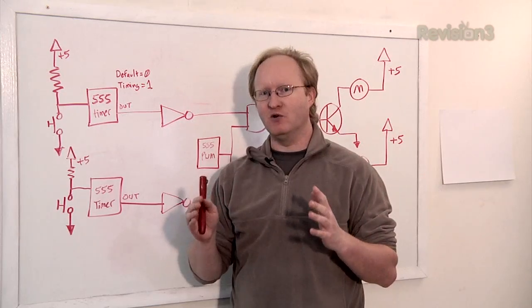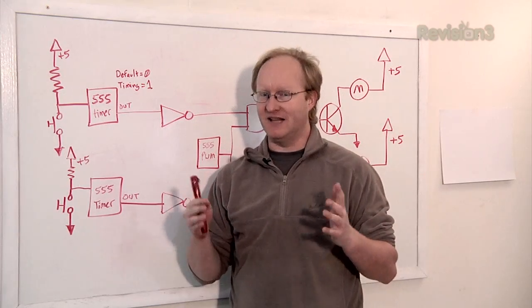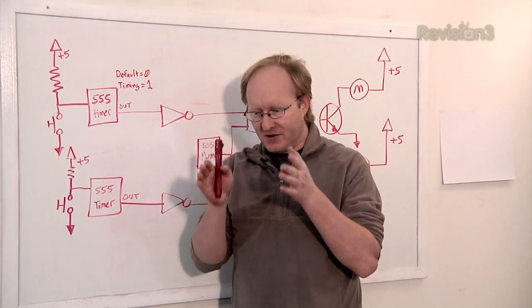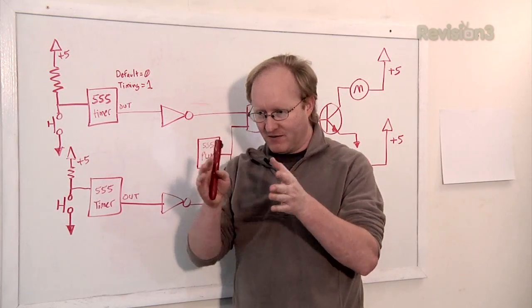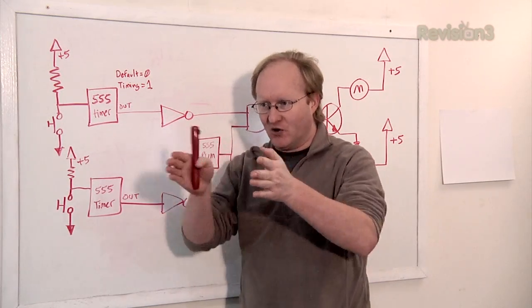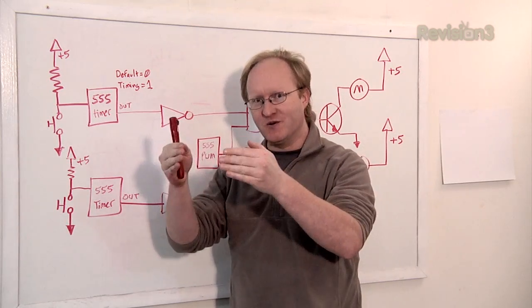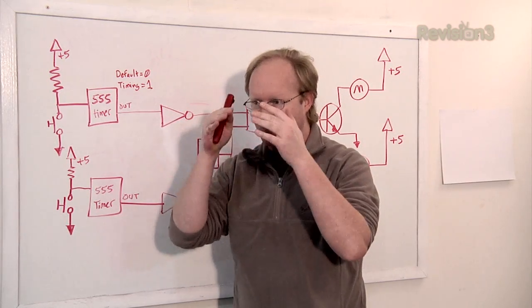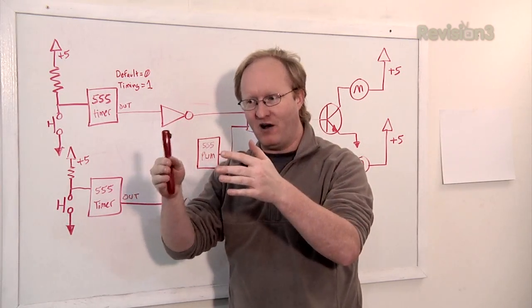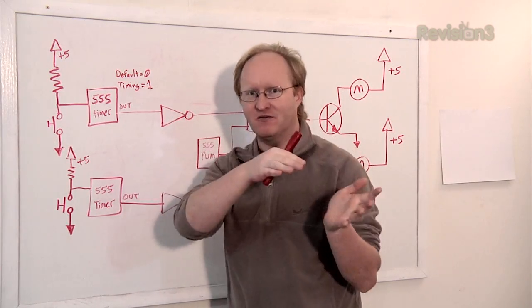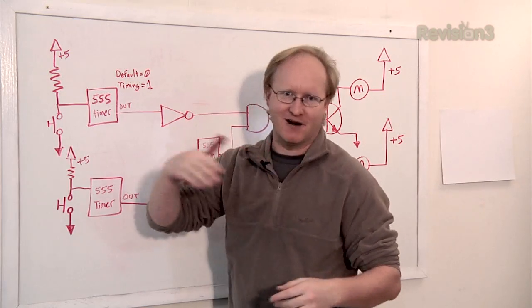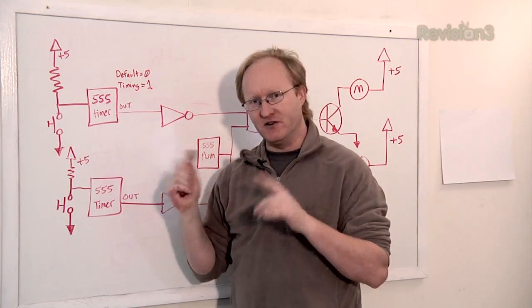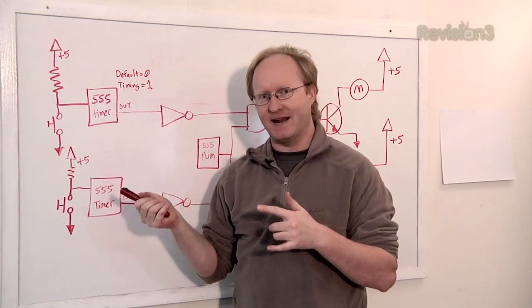Now I'm going to do a real world example of logic gates in action. The idea is to build a little robot with motors that goes around bumping into walls. There are two switches in front, left and right. And depending on which switch gets hit by the wall, it turns left or right, turns completely around, and then goes and hits another wall. So here's the logic that's going to make that happen.